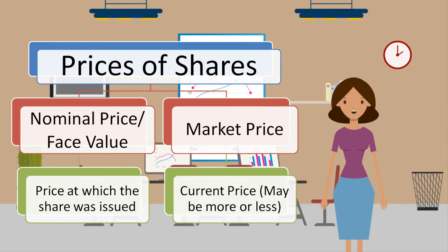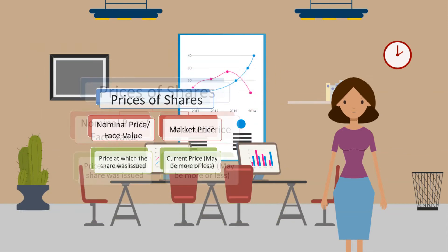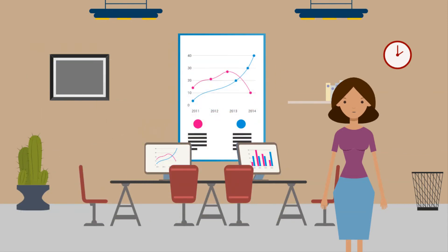The price of a share has a nominal or face value. This is the price that the share was issued at. It also has a market price, which is the price that the share can be sold or bought for. When you own shares, a dividend may be paid to you. A dividend is the share of profit given to the shareholder per share.